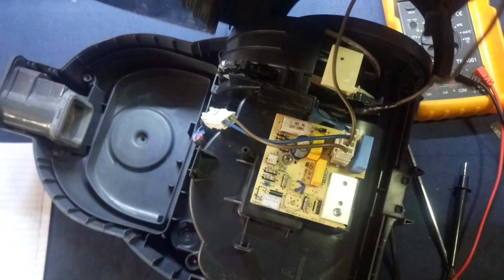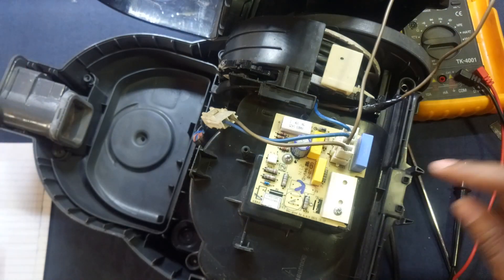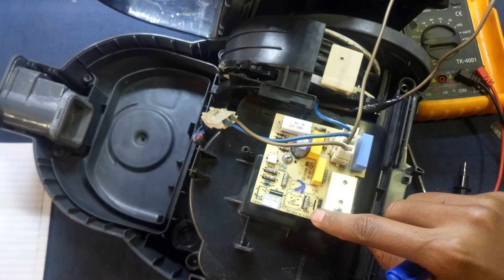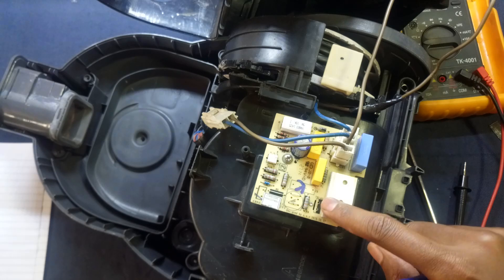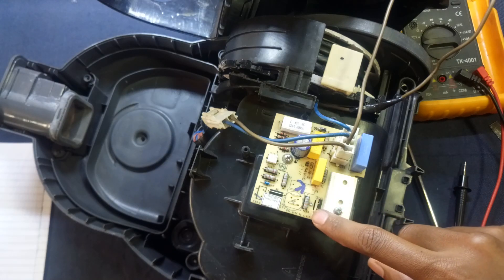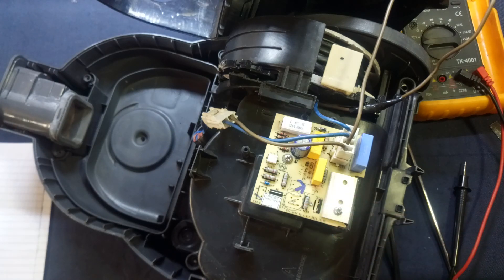In this vacuum cleaner, the triac is, you can say, missing or damaged. They rarely get damaged, but in this case it's missing. What I'm going to do is bypass this triac so that the vacuum cleaner can work.